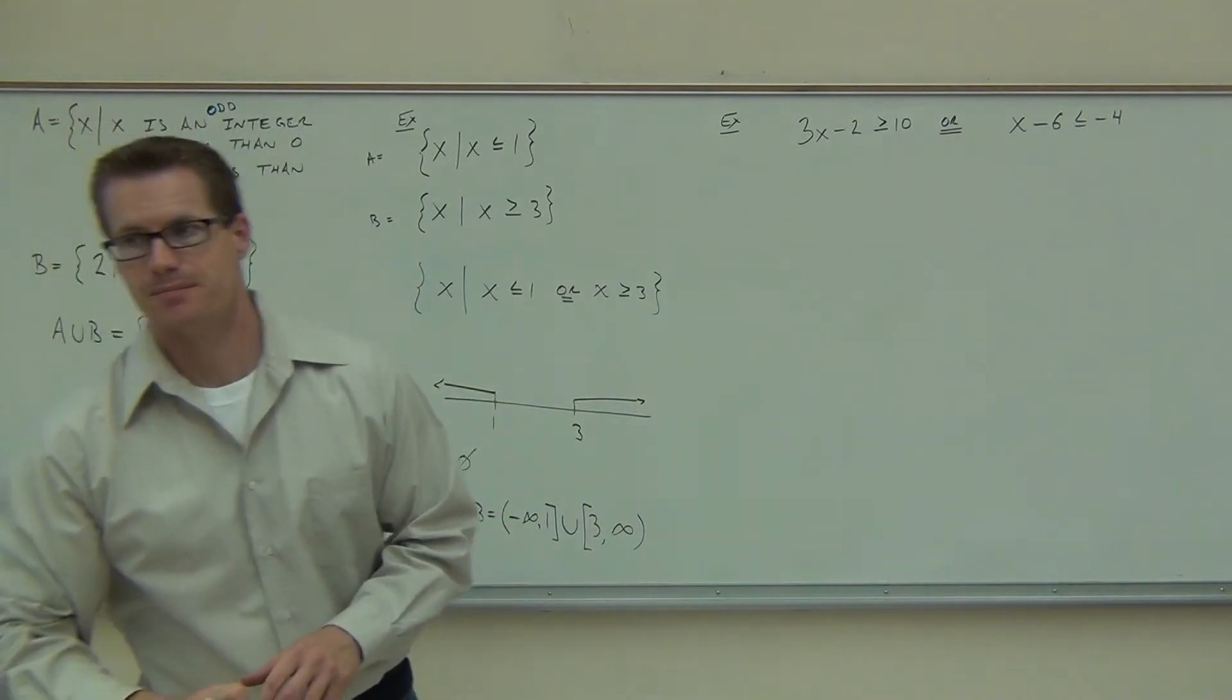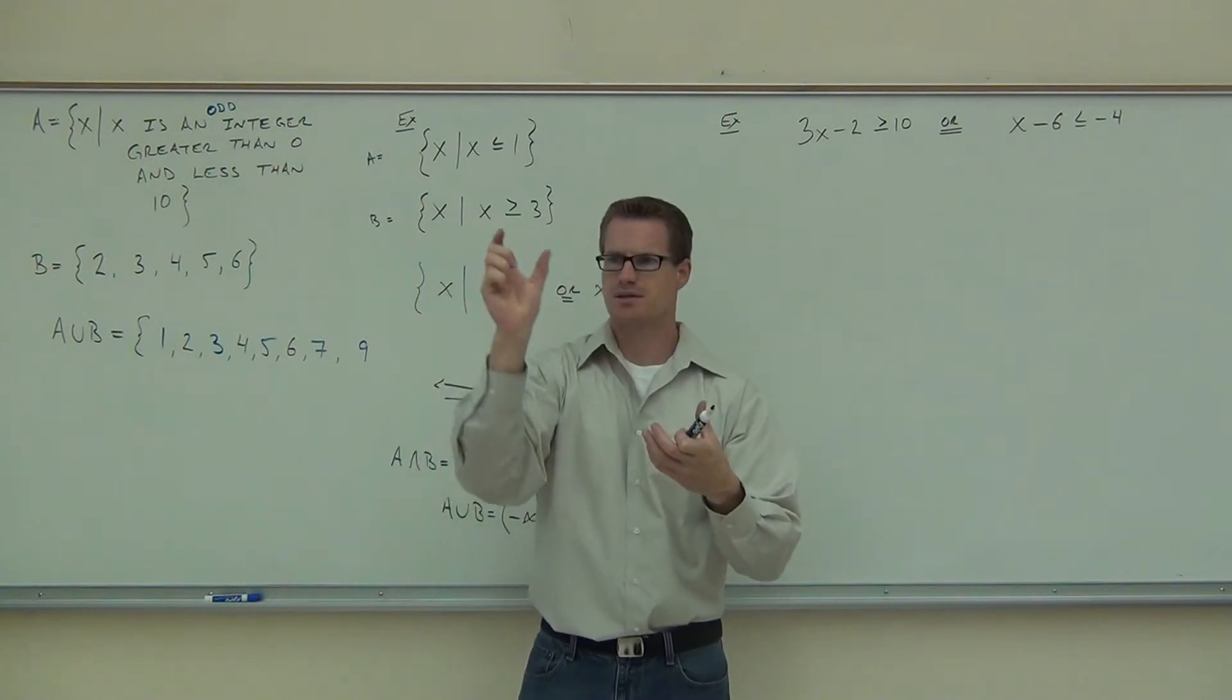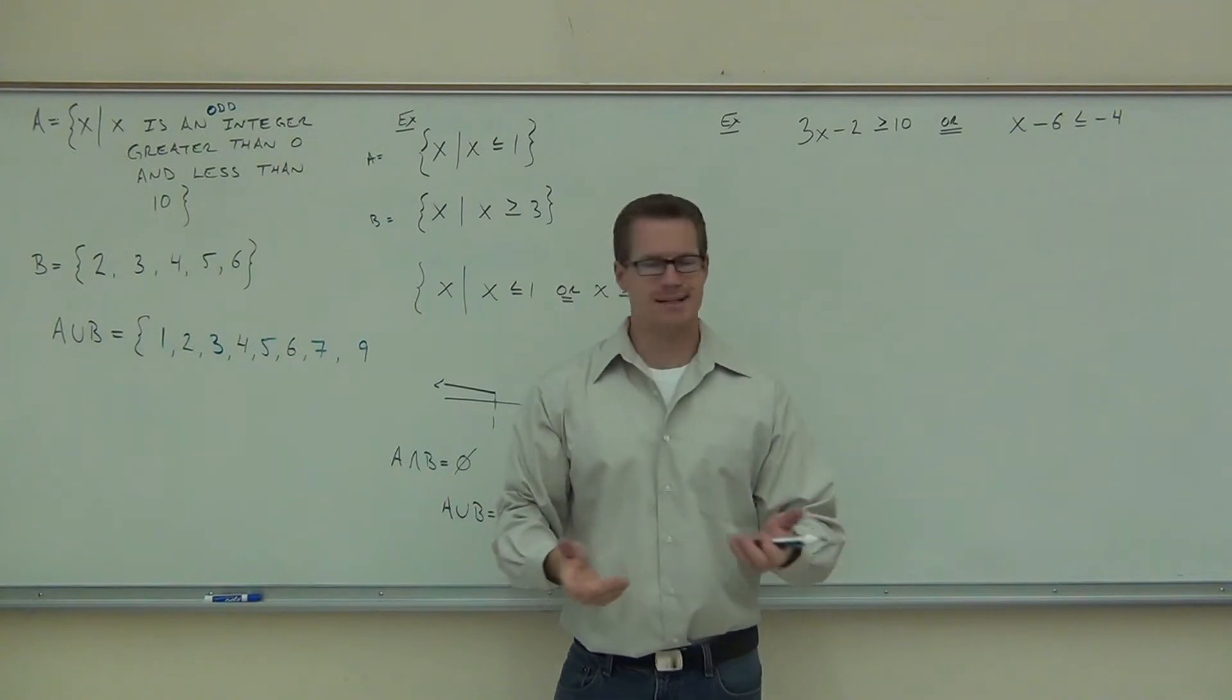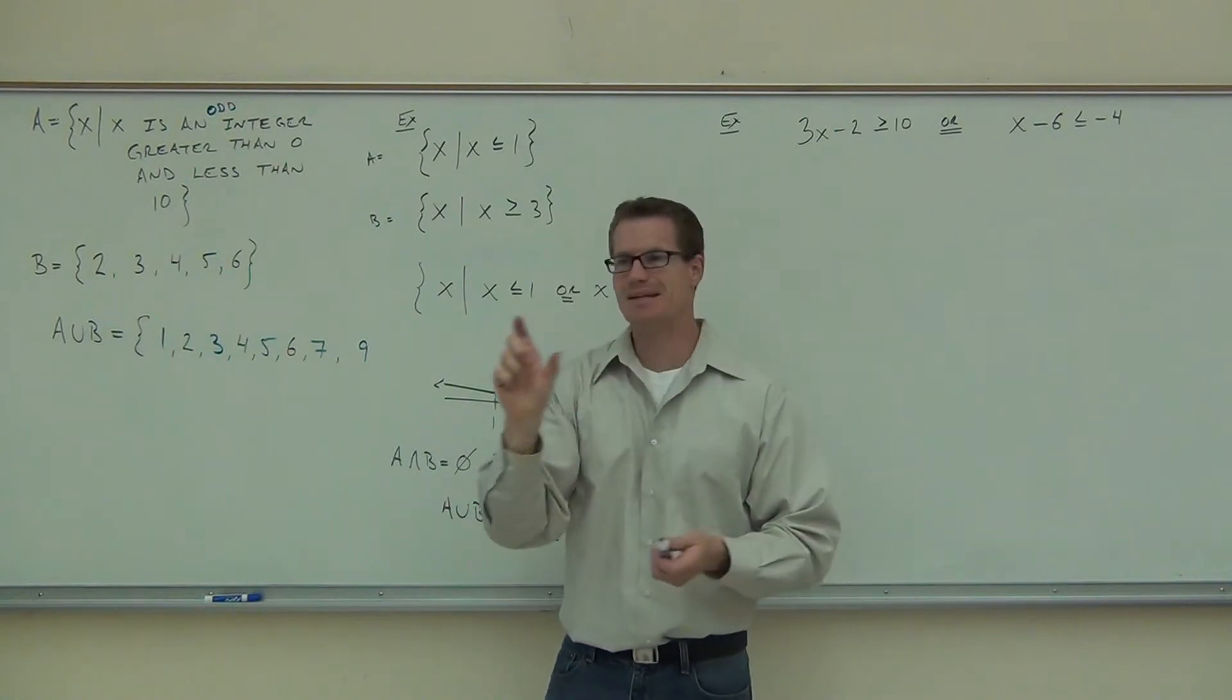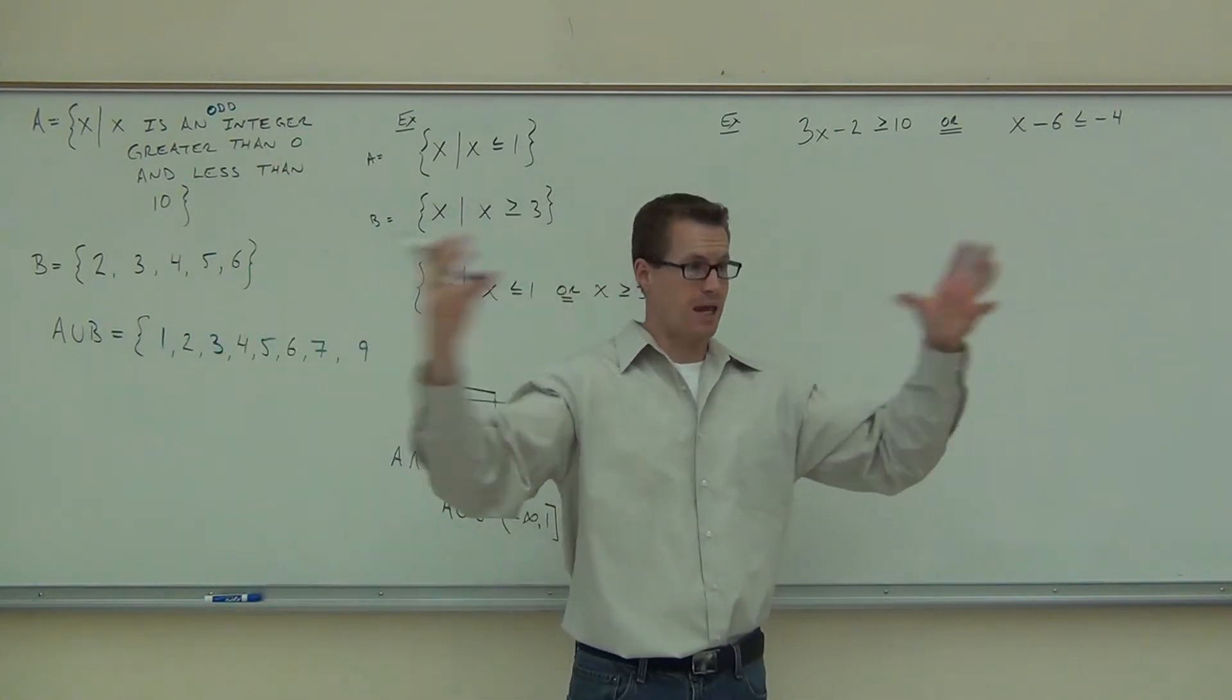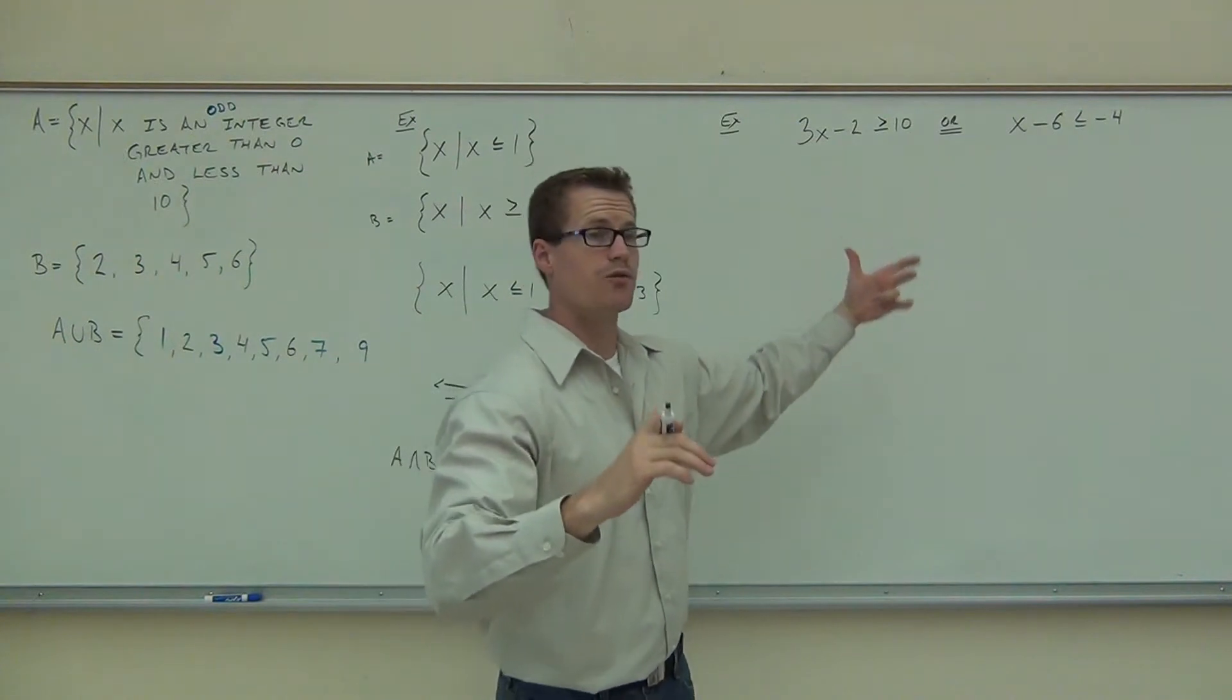Now, let me tell you something. With and, we were able to put inequalities together. You remember that? The compound inequality where it was like something less than something, less than something. You cannot do that with or. It just doesn't work. Because what you'd get is a number less than x greater than something else. And it doesn't make sense mathematically to do that.